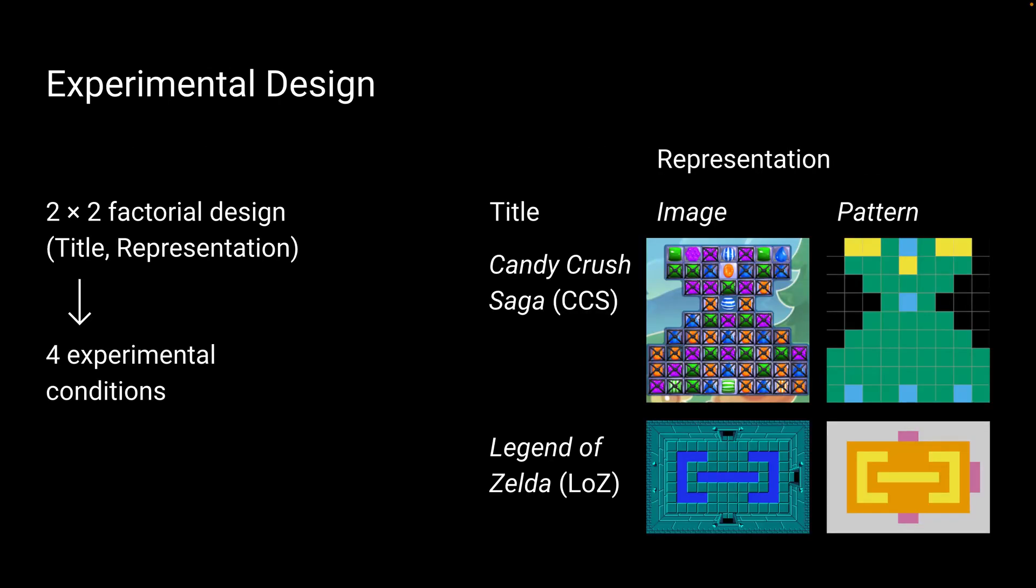This is our experimental design. We have two video game titles and two representations. These are the titles that I presented earlier, Candy Crush Saga and Legend of Zelda. The image representation is just screenshots of the levels. We have an abstract color pattern representation, which is a translation of the screenshot. We choose pattern representation because we want to focus on the abstract patterns that are used in the level design process and are also used by many PCG algorithms.